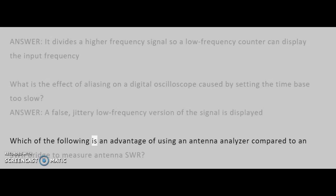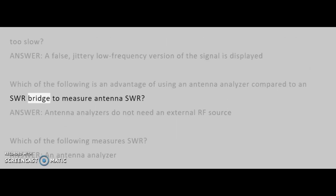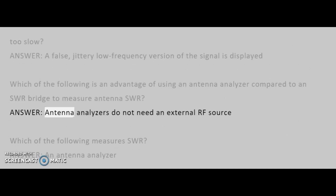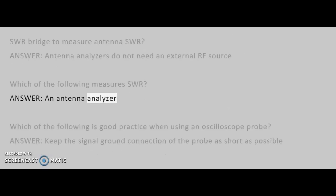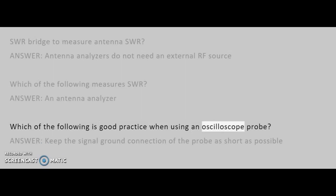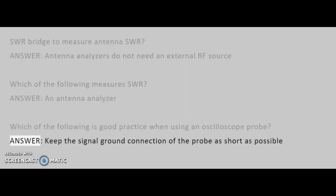Which of the following is an advantage of using an antenna analyzer compared to an SWR bridge to measure antenna SWR? Answer: Antenna analyzers do not need an external RF source. Which of the following measures SWR? Answer: An antenna analyzer. Which of the following is good practice when using an oscilloscope probe? Answer: Keep the signal-ground connection of the probe as short as possible.